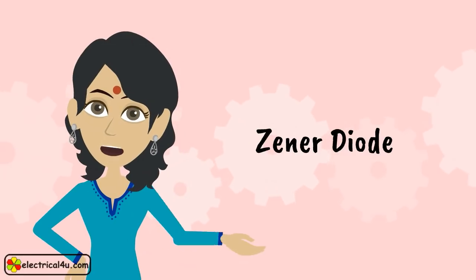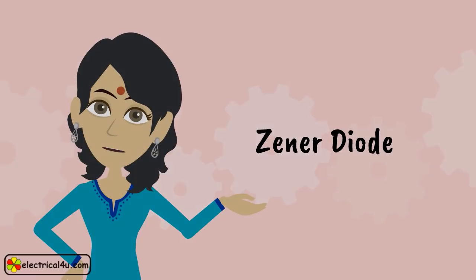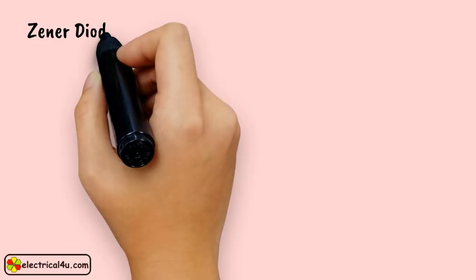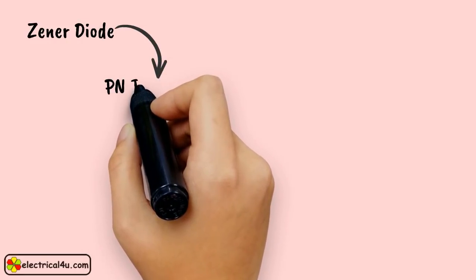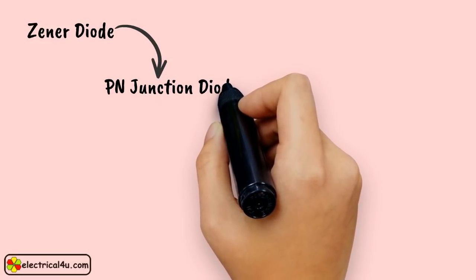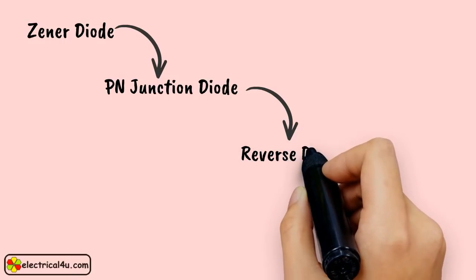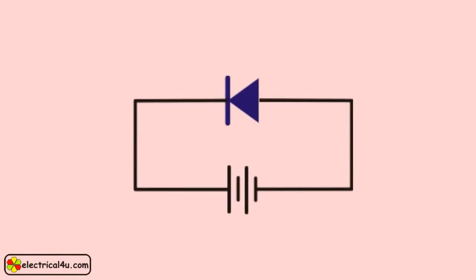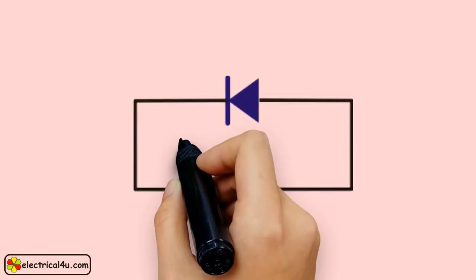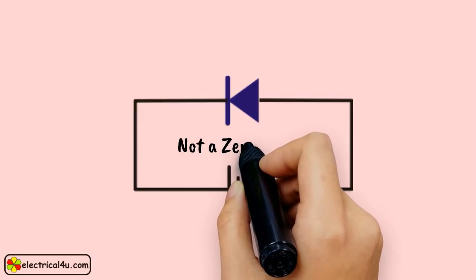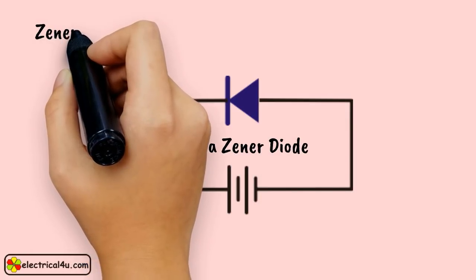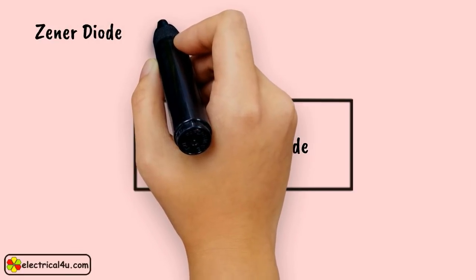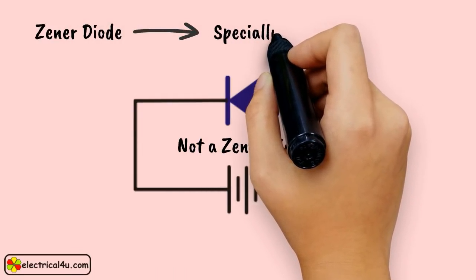Let us have a discussion on Zener diode. Zener diode is basically like an ordinary PN junction diode, but normally operated in reverse biased condition. However, an ordinary PN junction diode connected in reverse biased condition is not used as a Zener diode practically. A Zener diode is a specially designed, highly doped PN junction diode.